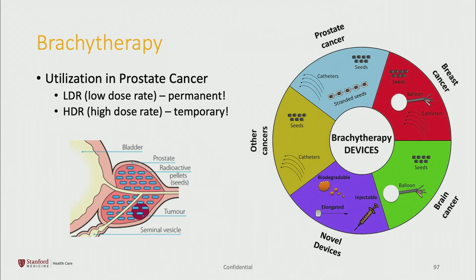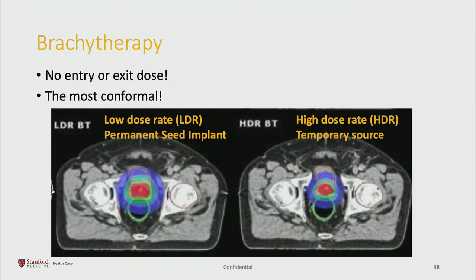Brachytherapy or internal radiation is used for multiple different types of cancers including prostate, breast, and cervical cancer. For prostate cancer specifically there are two different ways to deliver this, and they're equally effective. Low dose rate or LDR permanently implants radioactive sources that decay over time. High dose rate or HDR temporarily inserts a radioactive source and then removes it. Here at Stanford we offer the HDR type of brachytherapy. With brachytherapy there's really no entry or exit dose, so the radiation is more contained compared to external radiation.